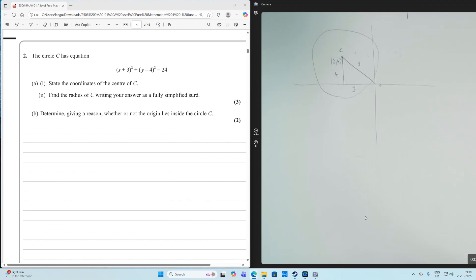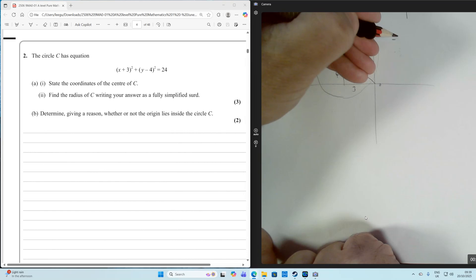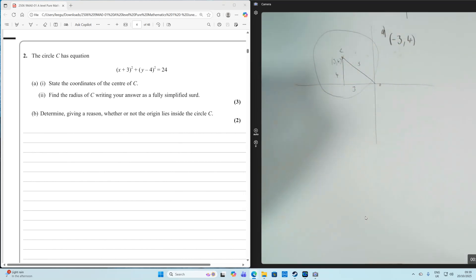State the coordinates of the center of the circle. The center of the circle is going to have coordinates of (-3, 4) because we change the signs from the equation.